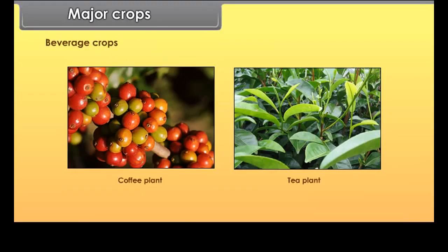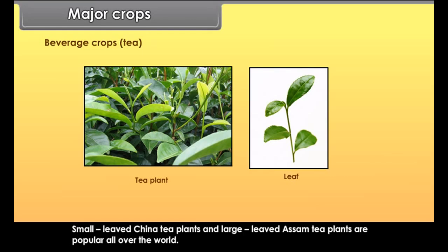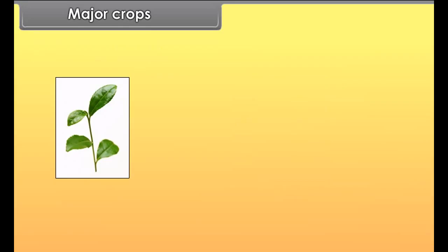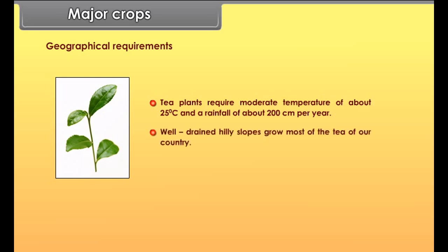Beverage crops include tea and coffee. Tea is made from the young leaves of the tea plant and has many varieties. Small-leaved China tea plants and large-leaved Assam tea plants are popular all over the world. Tea plants require moderate temperature of about 25 degrees Celsius and a rainfall of about 200 cm per year. Well-drained hilly slopes grow most of the tea.